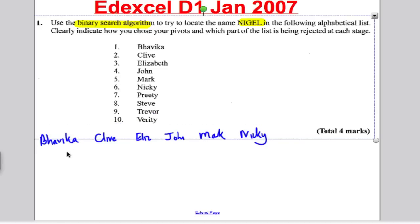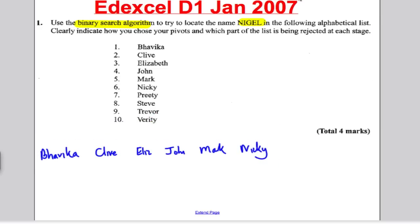So Bhavika, Clive, Elizabeth, John, Mark, Nicky, Pretty, Steve, Trevor, and Verity. The first thing is we've got ten items, so I would show some working. Ten items, middle is six, so I would write that to get my mark. And then I would highlight one, two, three, four, five, six, which is Nicky.